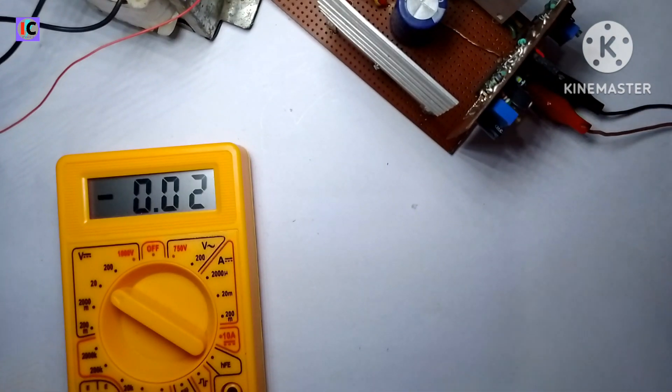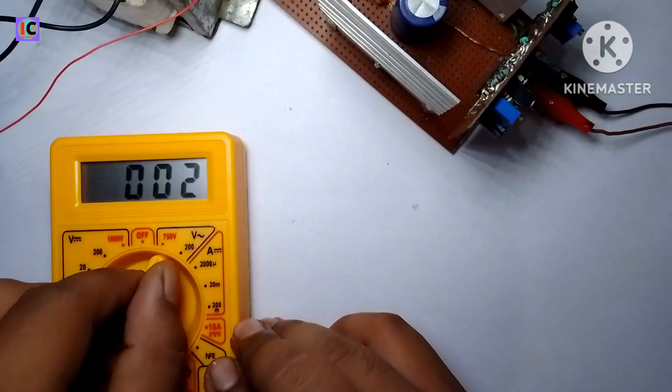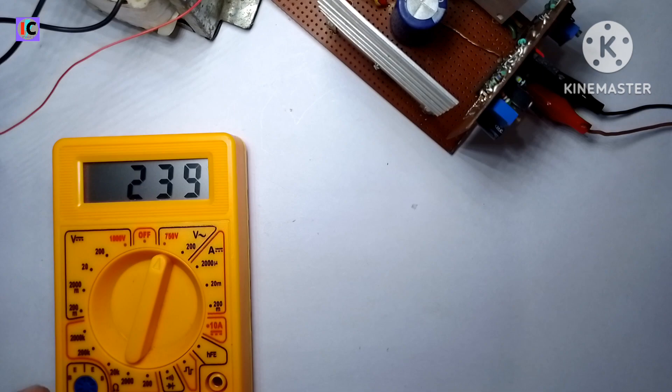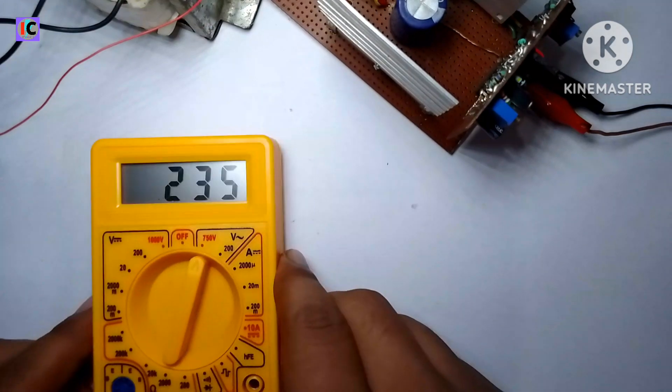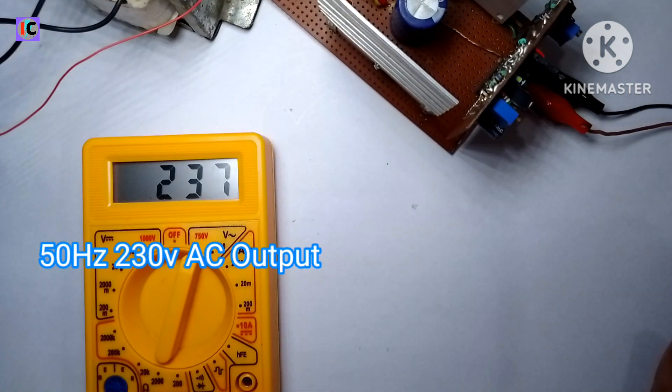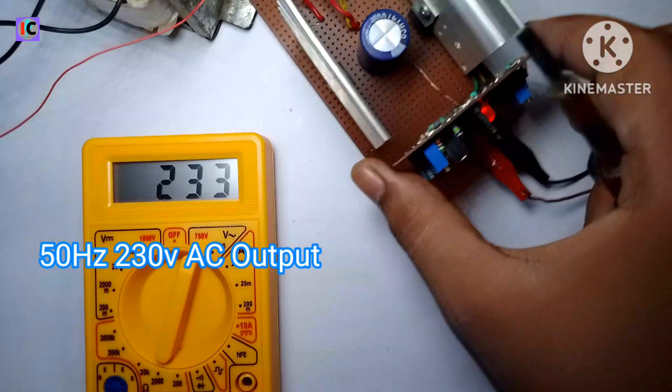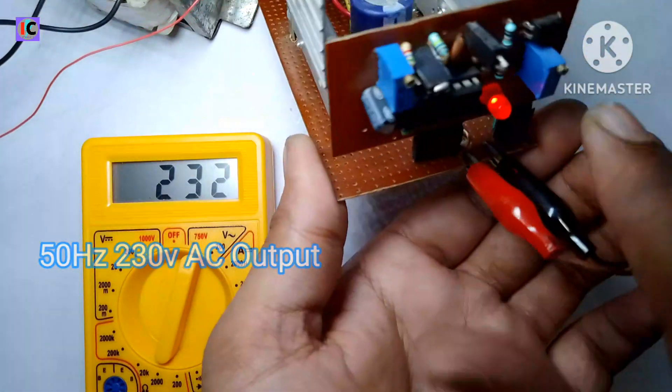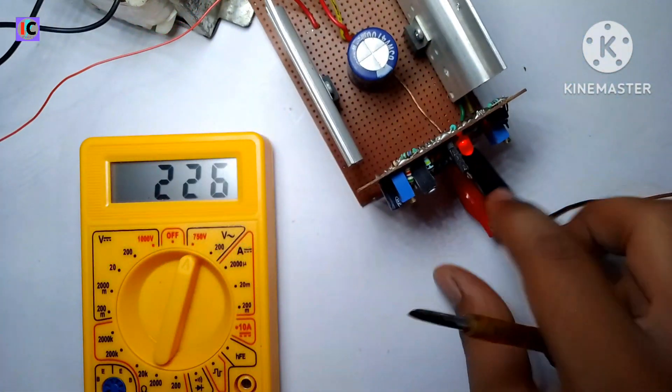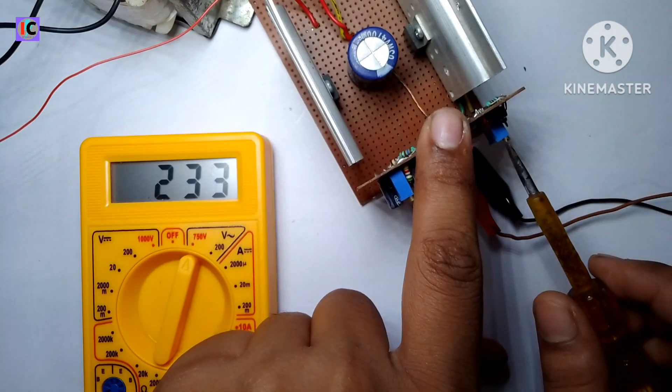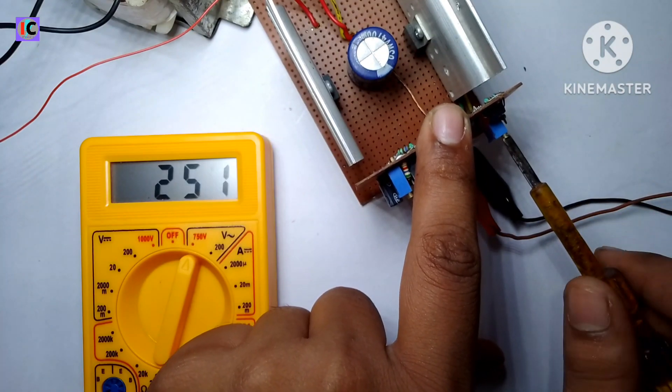It's my fault - the multimeter is set in the 20 volt DC mode, and I have to set this to 200 volt AC. Now you can see the 233 volt AC output from my inverter.